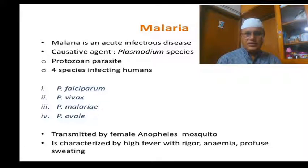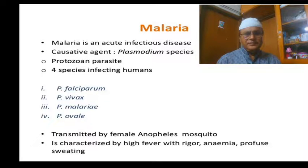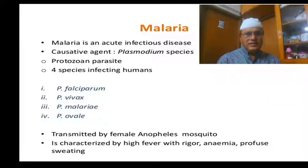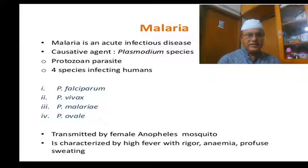Malaria is an acute infectious disease. It is a protozoal disease; the causative agent is Plasmodium species, a protozoan parasite. There are four species infecting humans: Plasmodium falciparum, Plasmodium vivax, Plasmodium malariae, and Plasmodium ovale.